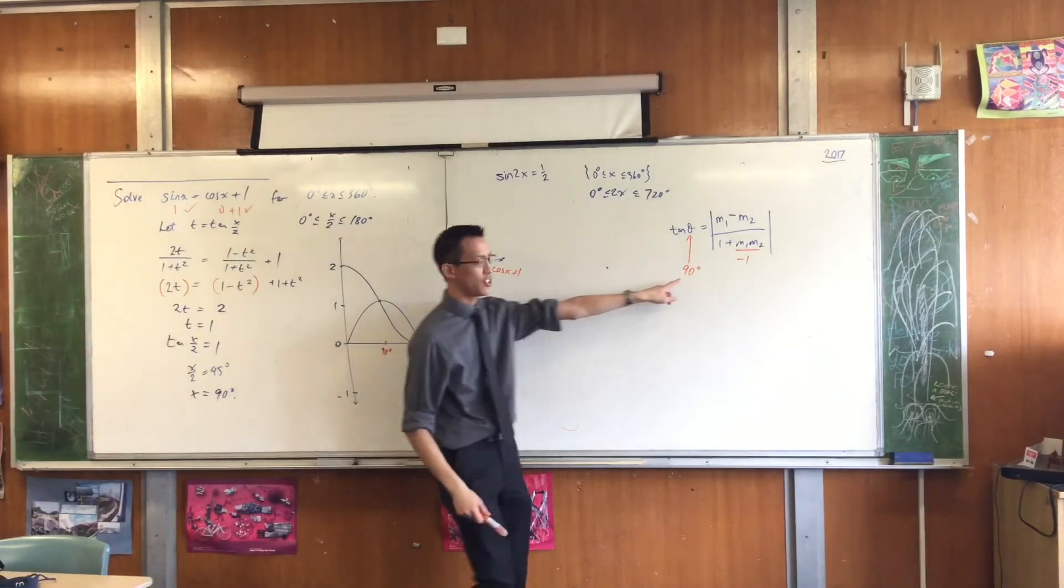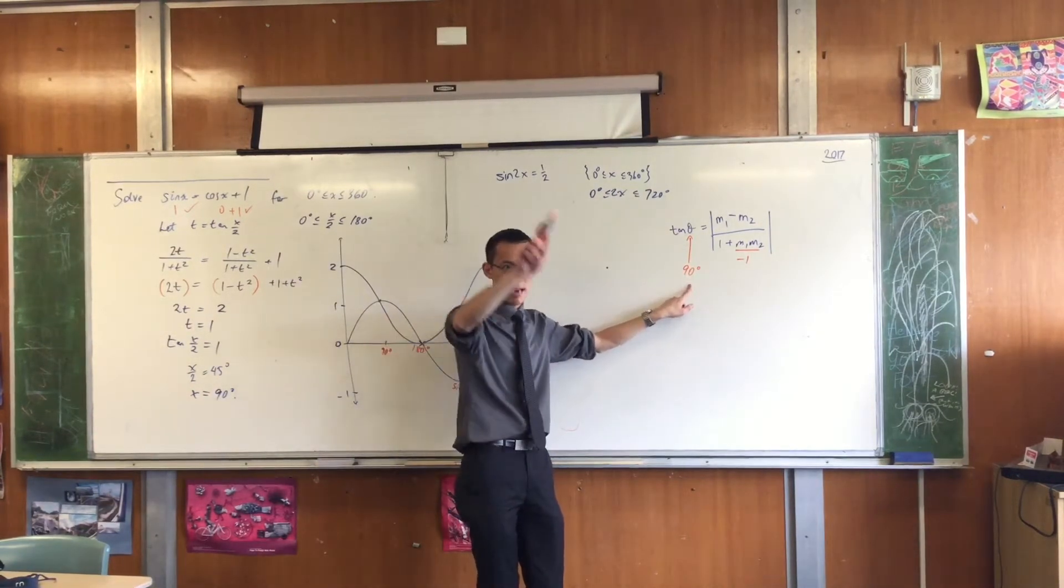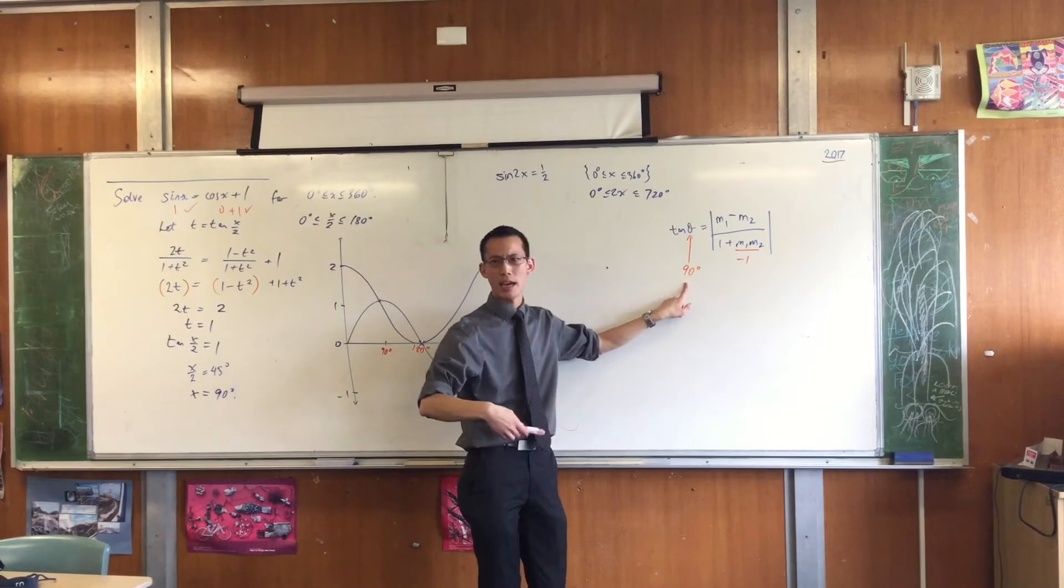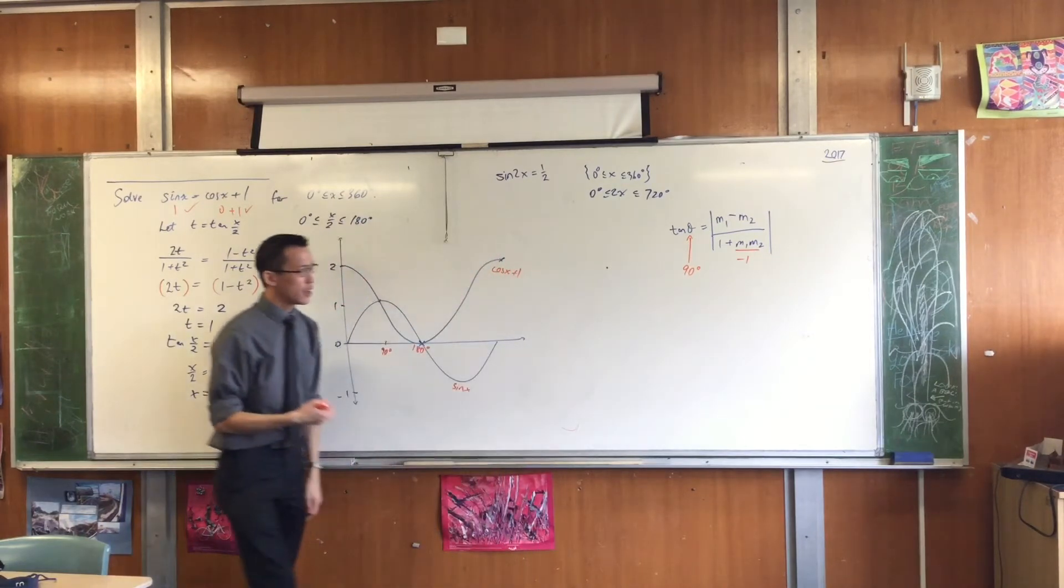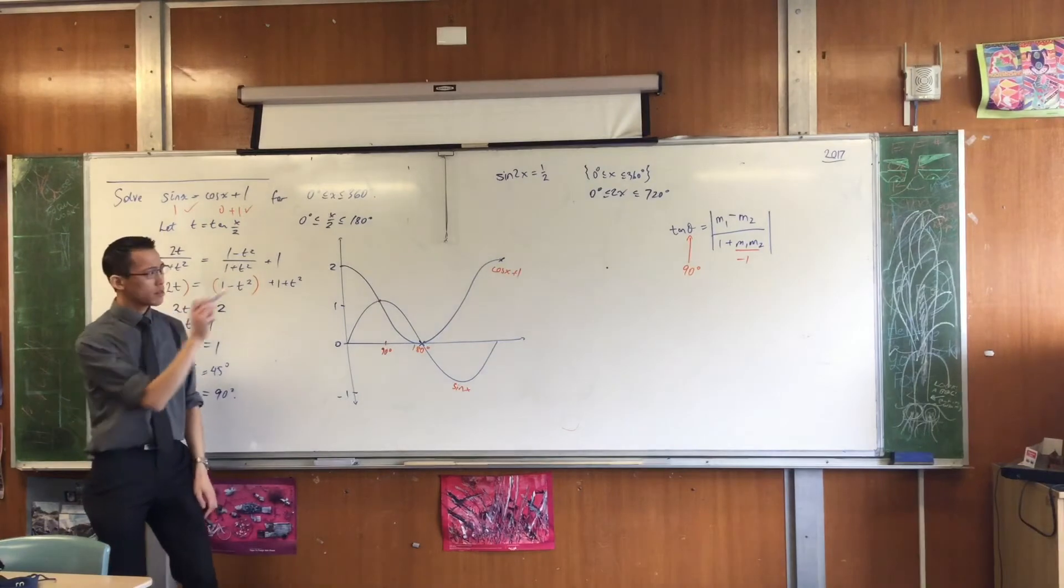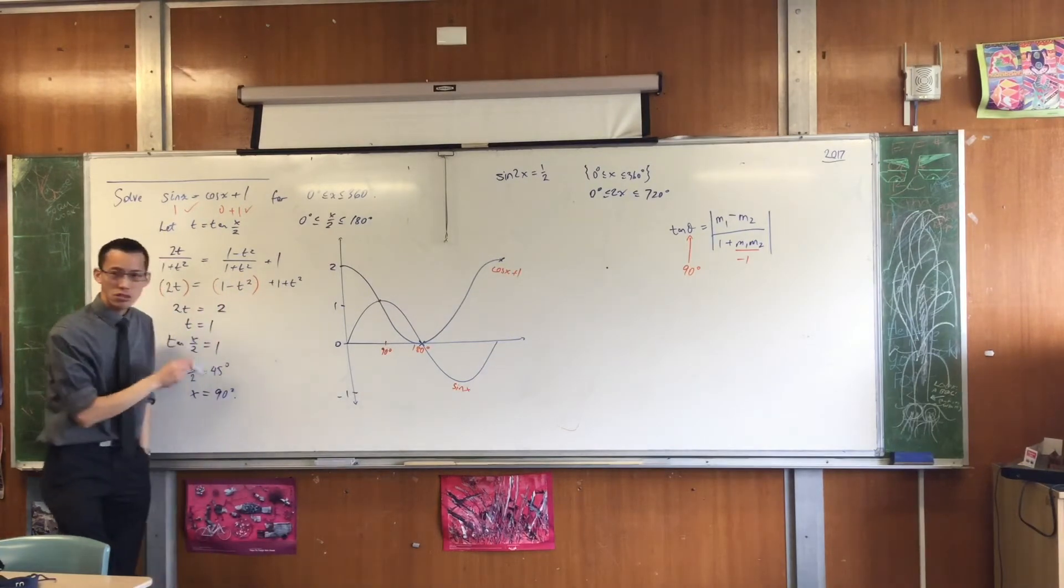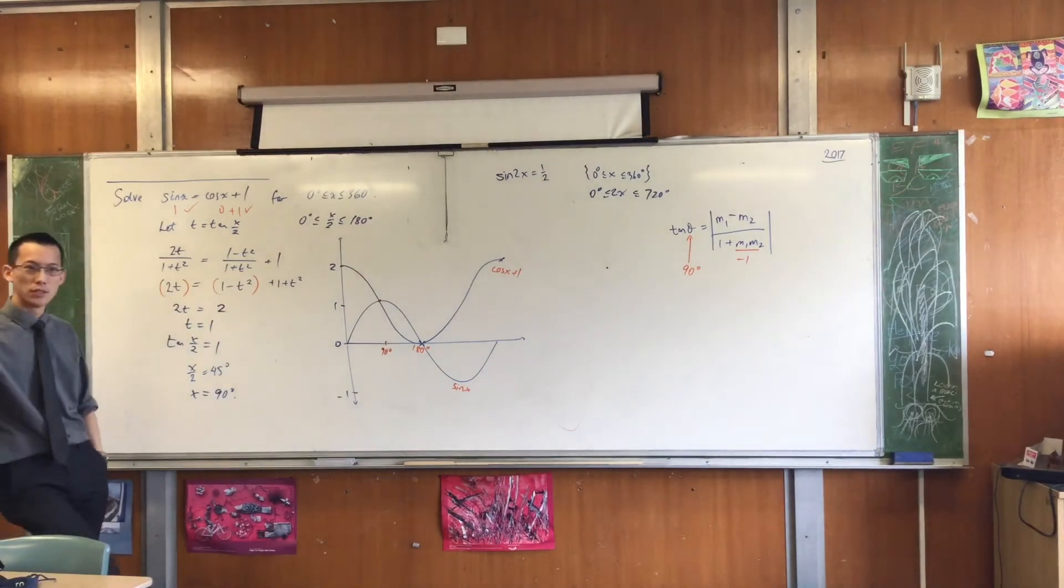Tan has this issue because it's got asymptotes at 90 and 270 and 450. So this is problematic. Do you see why it lands you on a problem here?